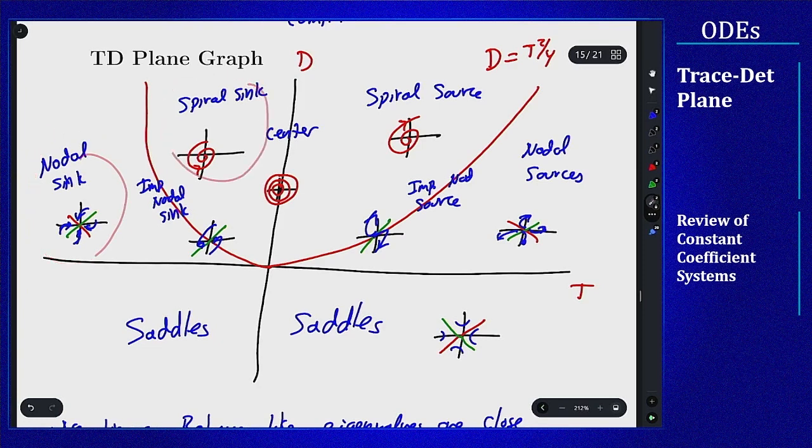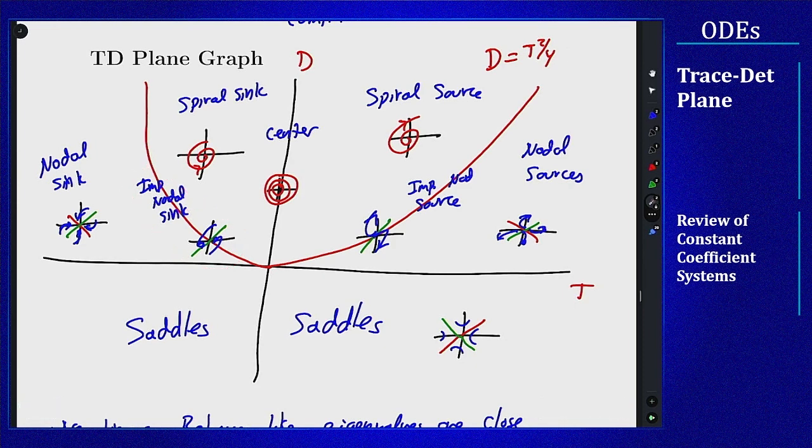Well that's our improper nodal sink on this boundary. So the improper sort of sits as a barrier or a boundary between the nodal sink and the spiral sink. And the improper nodal sink kind of has a behavior as well that sits between them.